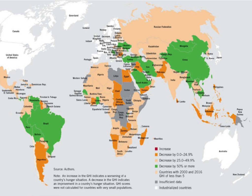The regions of the world struggling most with hunger are South Asia and Africa south of the Sahara, with scores in the serious range — 30.9 and 29.4 respectively. The scores of East and Southeast Asia, the Near East and North Africa, Latin America and the Caribbean, and Eastern Europe and the Commonwealth of Independent States range from low to moderate.